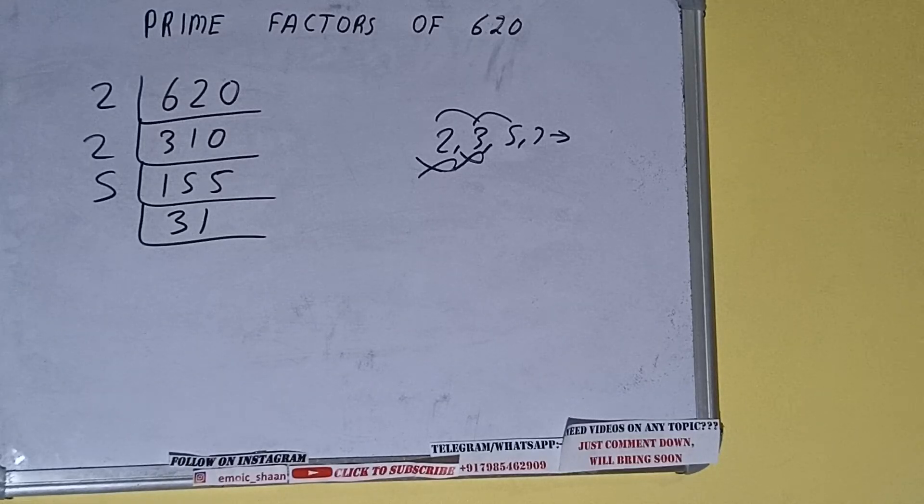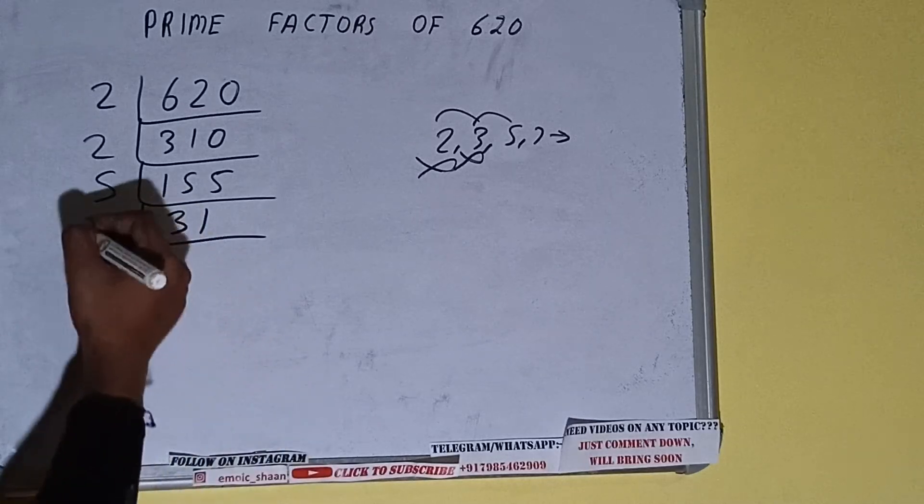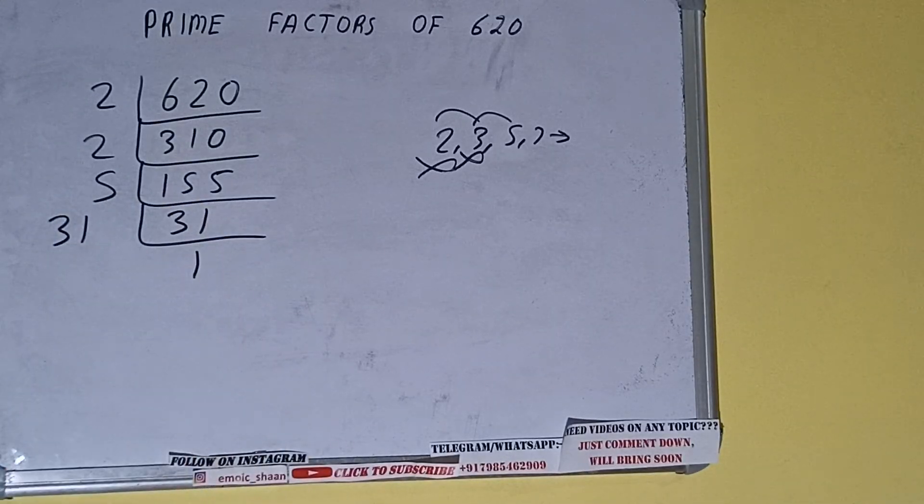31 is further not divisible by 5, and 31 is also a prime number. So it is only divisible by itself, that is 31. And once we do so we'll be getting 1.